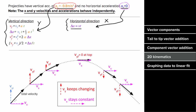The total speed of the projectile decreases as you approach the top, and at the top there is zero vertical component of velocity since the projectile is not moving up or down at that moment. Then on the way down, the vertical component of the velocity gets more and more negative, which increases the speed of the projectile.